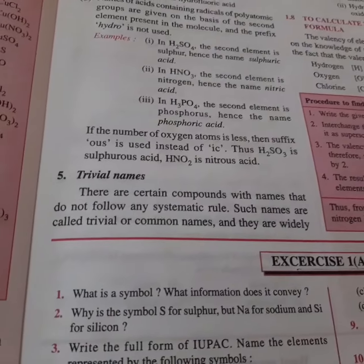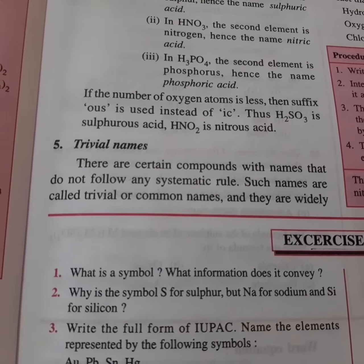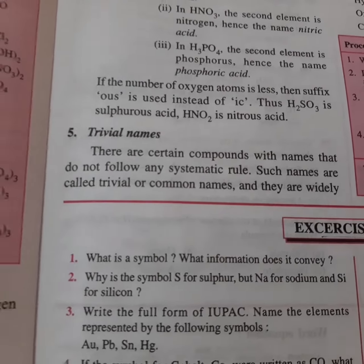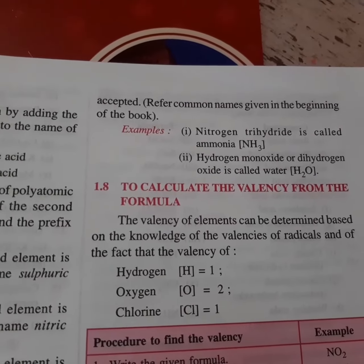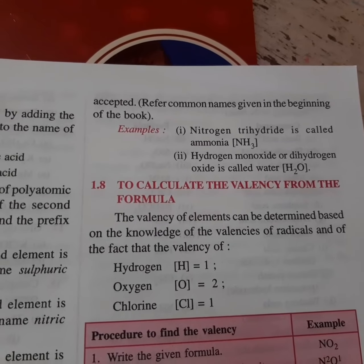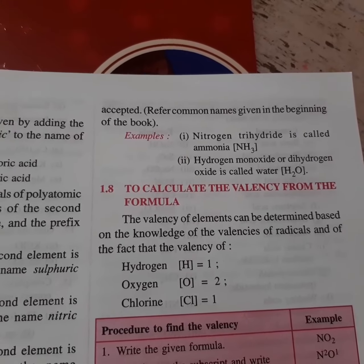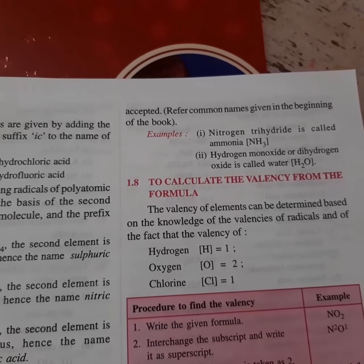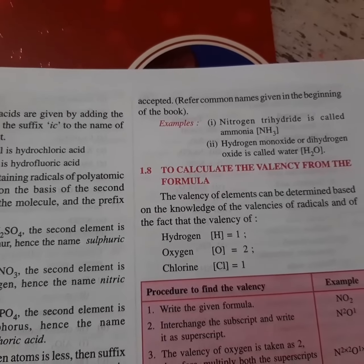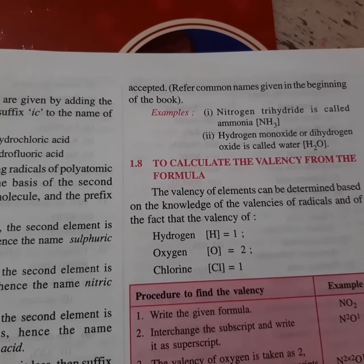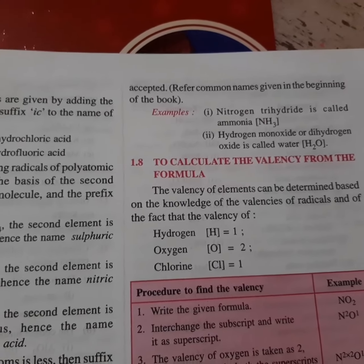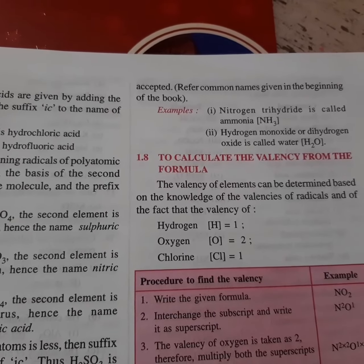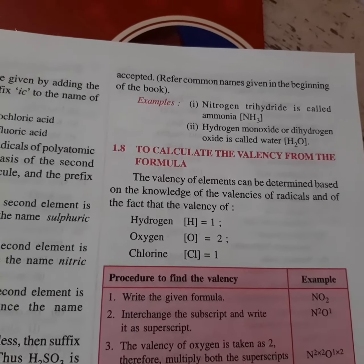There are certain trivial names. Some compounds do not follow these systematic rules — their names are accepted as they are, from the sources they are obtained or by common name. For example, NH3 systematically should be nitrogen trihydride, but its trivial name ammonia is generally used. In the case of water, it is hydrogen monoxide or dihydrogen oxide, but the name water is widely accepted.